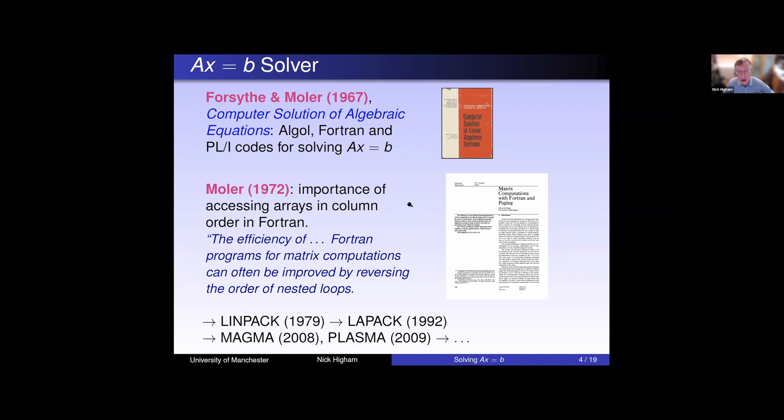So a few years later, 1972, Cleve pointed out that the order in which you access the arrays can make a big difference to the performance. Just by flipping the order of the inner loops, you can get a big increase. The idea was to access the arrays in the order in which they're stored. In Fortran, that means going down the columns in the innermost loop. The context here was paging rather than cache, as we'd call it today.